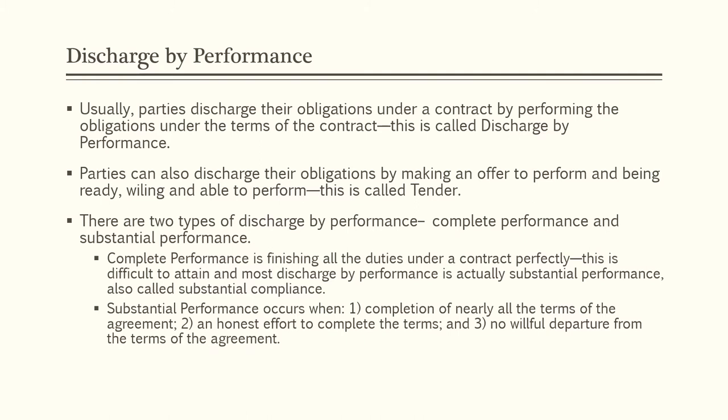There are two types of discharge by performance: complete performance and substantial performance. Complete performance is finishing all the duties under a contract perfectly. This is difficult to attain, and most discharge by performance is actually substantial performance, also called substantial compliance. Substantial performance occurs when there is completion of nearly all the terms of the agreement, an honest effort to complete all the terms, and no willful departure from the terms of the agreement.